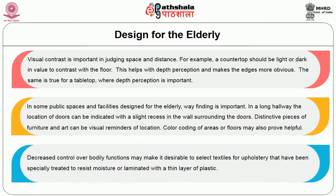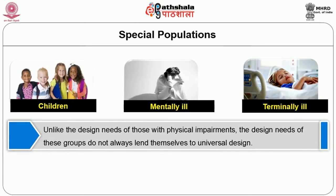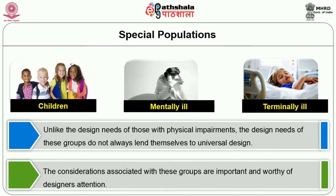Decreased control over bodily function may make it desirable to select textiles for upholstery that have been specially treated to resist moisture or laminated with a thin layer of plastic. Other special populations include children, the mentally ill, the terminally ill, and many others. Unlike the design needs of those with physical impairments, the design needs of these groups do not always lend themselves to universal design, but the considerations associated with these groups are important and worthy of designers' attention.